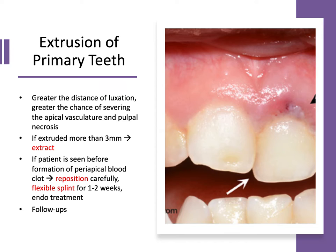What about extrusion of the primary tooth? That means the primary tooth has been partially extruded out from the socket. The greater the distance of luxation, the greater the chance of severing the apical vasculature and causing pulpal necrosis. If the tooth is extruded more than three millimeters, we recommend extracting and maintaining space. But if the patient is seen before formation of a periapical blood clot, we can reposition the tooth carefully, place a flexible splint for one to two weeks, and perform any necessary endodontic treatment. Follow-ups are recommended.